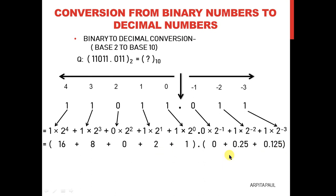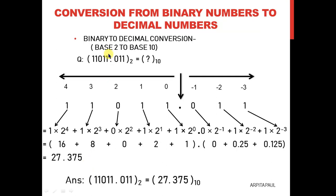Now we add these numbers separately. 16 plus 8 plus 2 plus 1 becomes 27, and 0 plus 0.25 plus 0.125 becomes 0.375. So this is how we can convert a binary number into a decimal number. 11011 is 27 in decimal and .011 is 0.375 in decimal. This is how we convert base 2 to base 10.